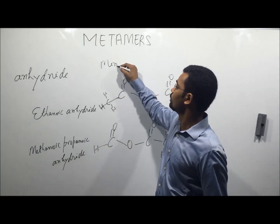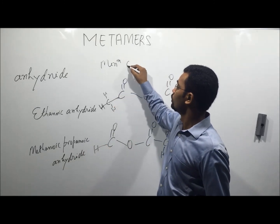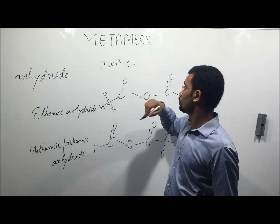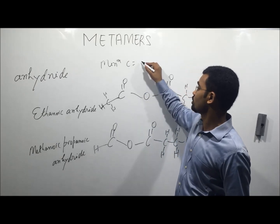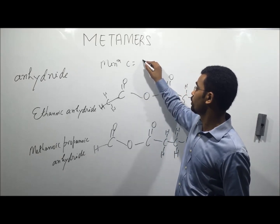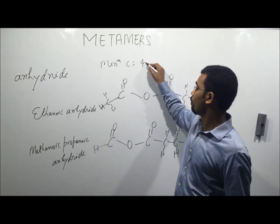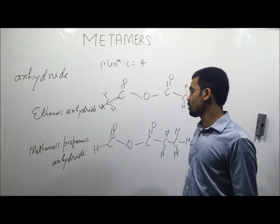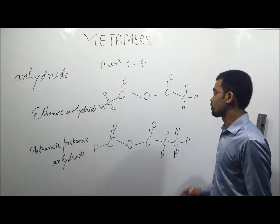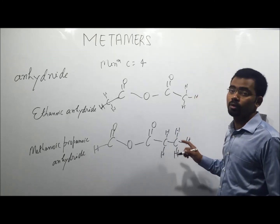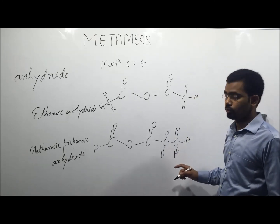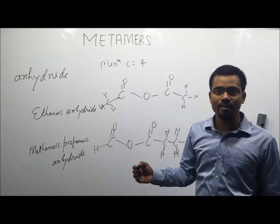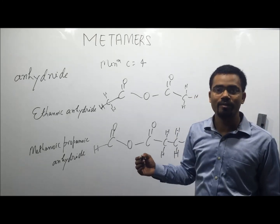So the minimum number of carbon atoms required to show meta-isomers for anhydride is 4, and the total number of meta-isomers is 2. Thank you for watching my video.